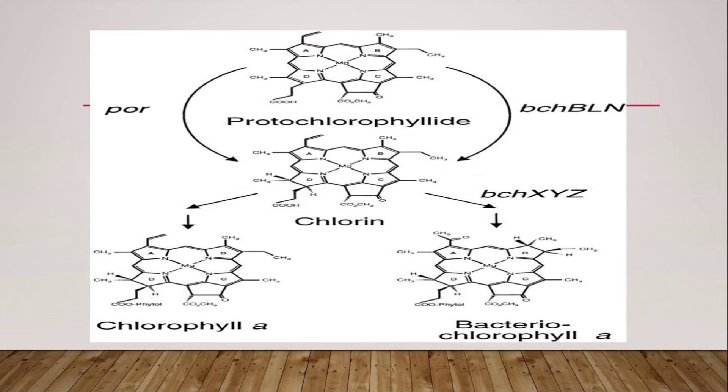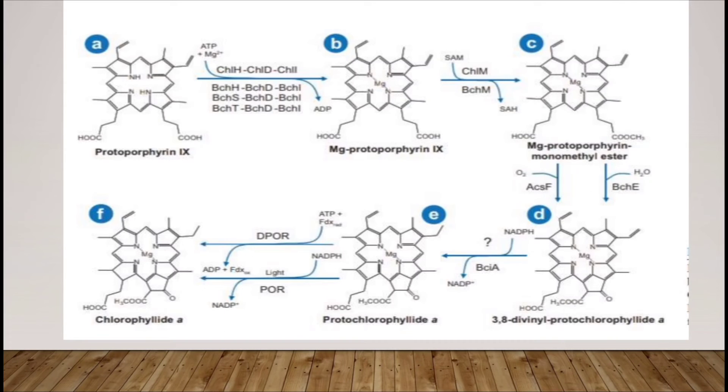This slide shows us how chlorophyll are synthesized. First, protochlorophyllide derived from the chlorin. In the chlorin, chlorophyll a and bacteriochlorophyll are synthesized. Next let's see the steps involved in chlorophyll synthesis. First step is protoporphyrin IX is converted into magnesium protoporphyrin IX. That is, magnesium chelatase enzymes are involved.